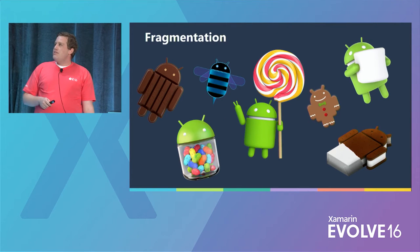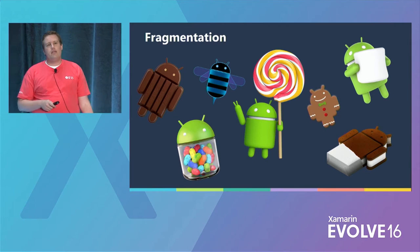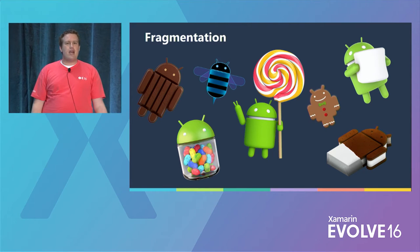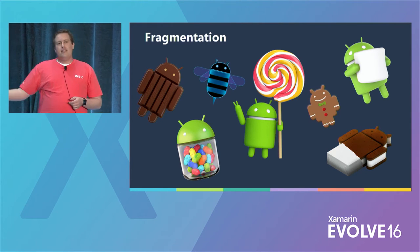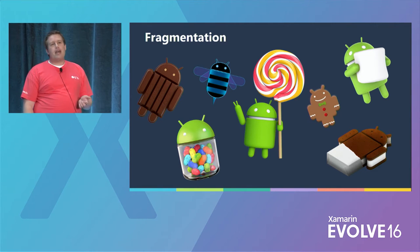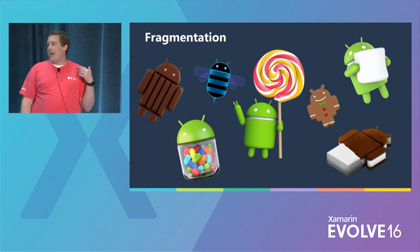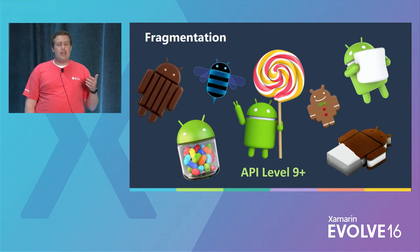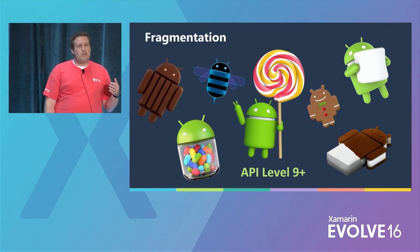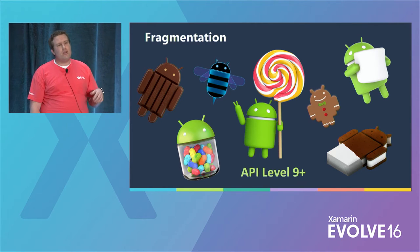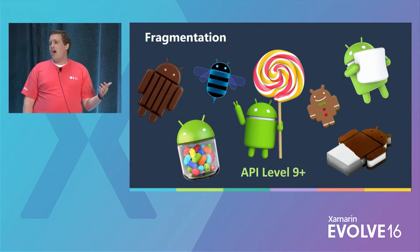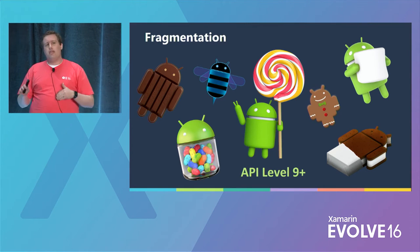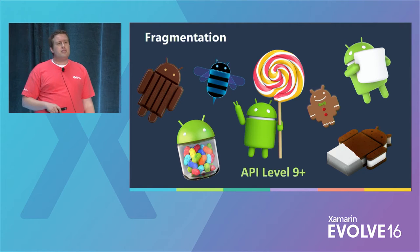Another great reason to use Google Play Services is fragmentation. Google Play Services gives us a really nice answer to this. It works all the way back to API level 9 — that's Gingerbread, Android version 2.3. That's only about 2% of all the devices out there, so we're hitting a lot of devices. And you don't have to tailor your API to check whether you're on a certain API level — it just works.